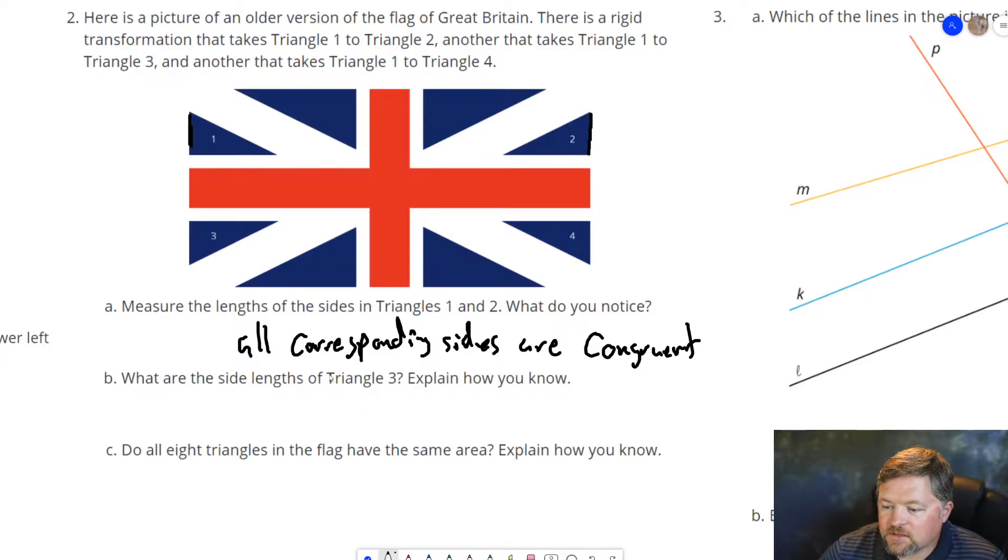What are the side lengths of triangle 3? They are the same as triangle 1 and 2. Because there's a rigid transformation that takes this triangle and puts it here, puts it here, puts it here. They all have to be congruent to each other.